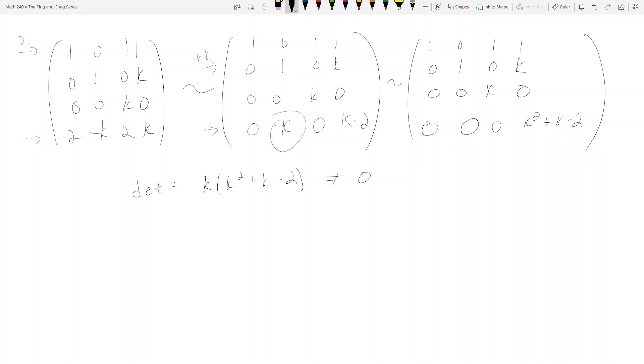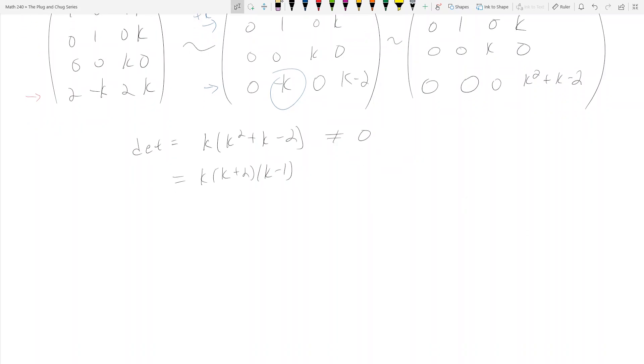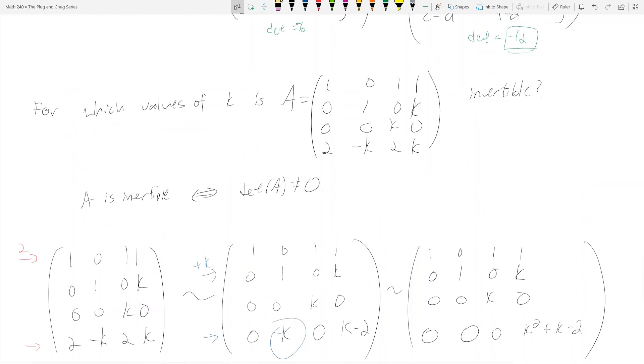Remember this is K squared plus K minus 2, and so what we realize, for this not to be zero, K cannot equal zero, negative 2, or 1.